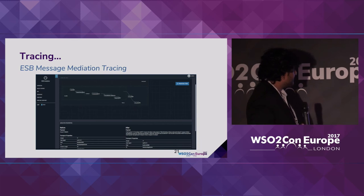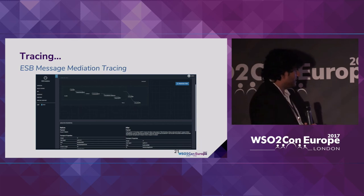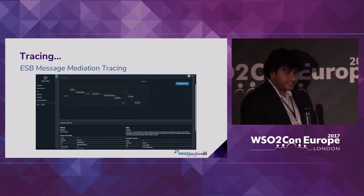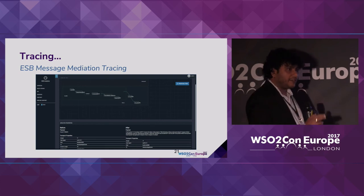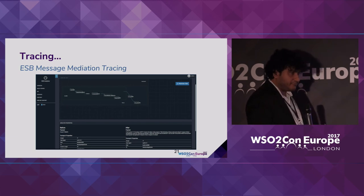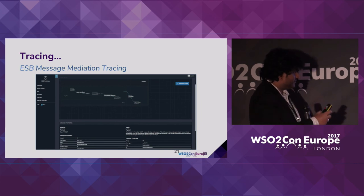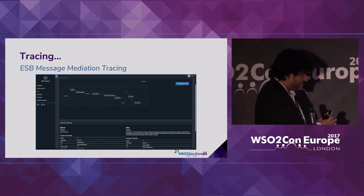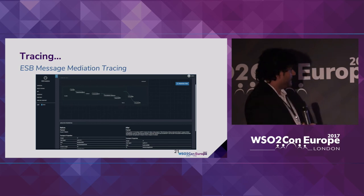This is what basically happens in our ESB message mediation tracing. If you get an ESB message mediation flow sequence, for each of the mediators we can track what events and messages have gone through the mediators, debug them and see where the problems are and so on. Basically from this you have the full view of what has happened through your integration platform.